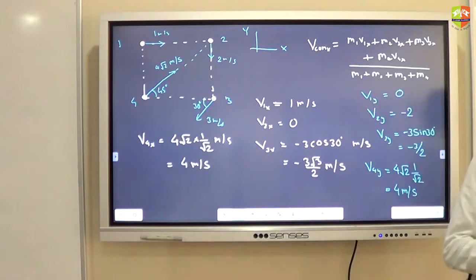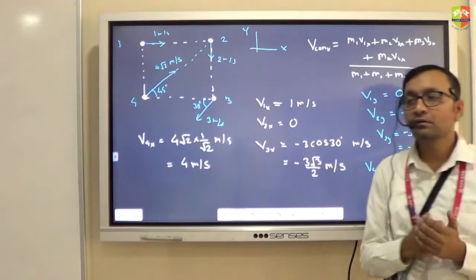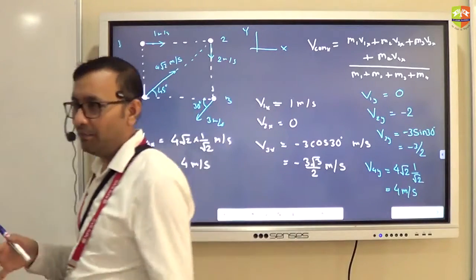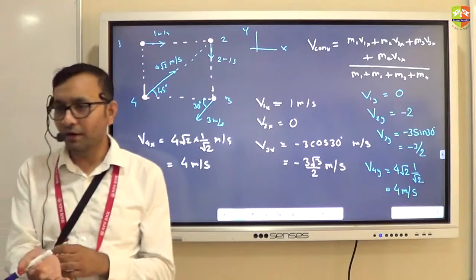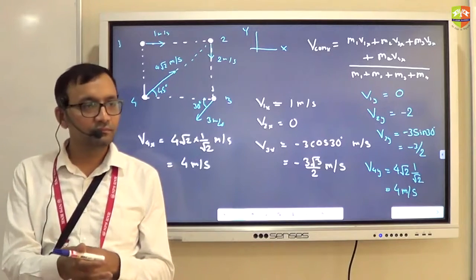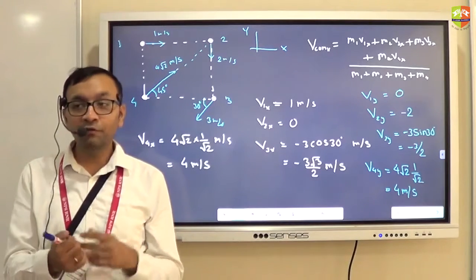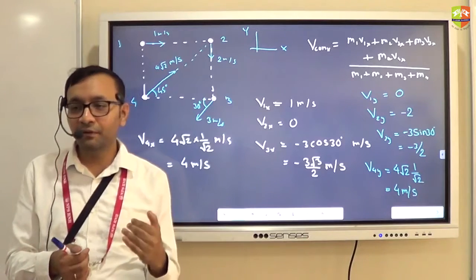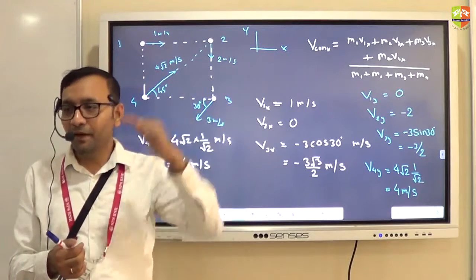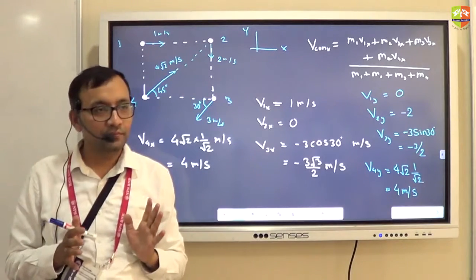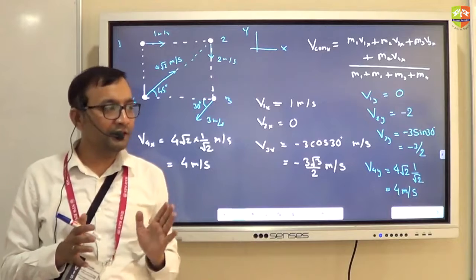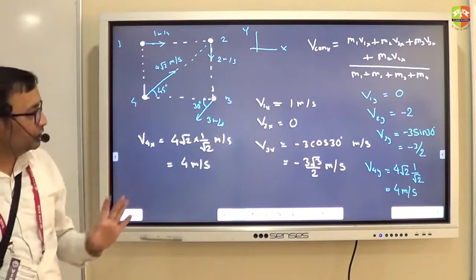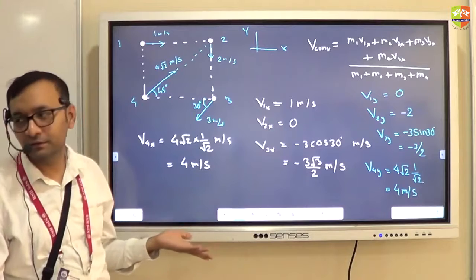The total velocity of center of mass is the square root of VCM x squared plus VCM y squared. The direction of VCM is given by tan inverse of VCM y divided by VCM x — that angle is measured from the x-axis. That's it for the velocity of center of mass.